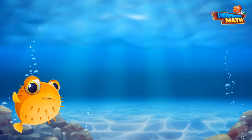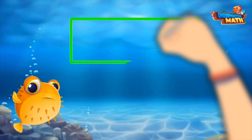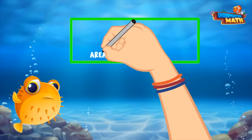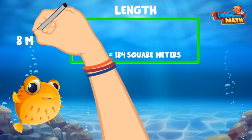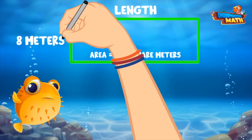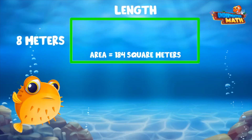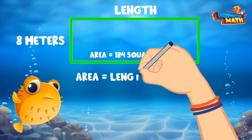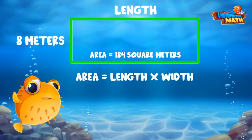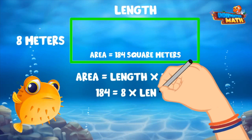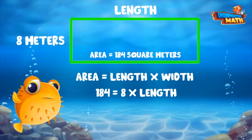Let's try another one, but with area. The floor of the ocean of our home has an area of 184 square meters. We know one width is 8 meters. Let's use our formula for area and plug in the missing pieces. The formula is area equals length times width. We know the area is 184 square meters and the width is 8 meters. We don't know the length.